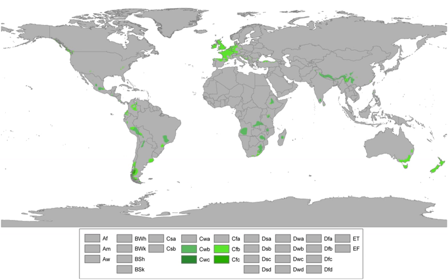Subpolar oceanic climates feature only one to three months of average monthly temperatures that are at least 10 degrees Celsius. As with oceanic climates, none of its average monthly temperatures fall below minus 3.0 degrees Celsius or 0 degrees Celsius depending on the isotherm used. Typically, these areas in the warmest month experience daytime maximum temperatures below 17 degrees Celsius, while the coldest month features highs near or slightly above freezing and lows just below freezing.